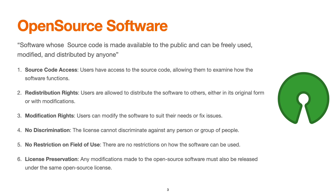There is no discrimination against any specific person or group of people. Regarding restrictions on field of use, there are literally no restrictions on how the software can be used. Finally, for license prevention, any modifications to the open source software must also be released under the same open source license — typically Apache or GPL version 2.0.